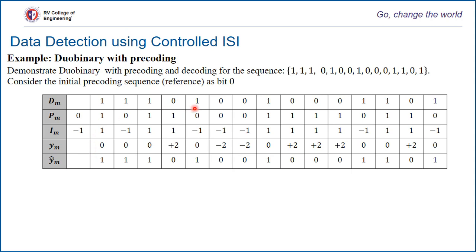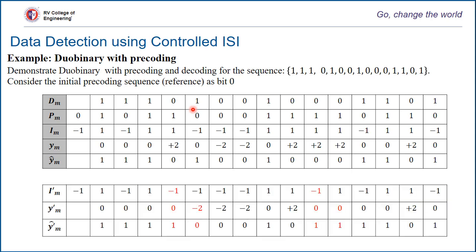Now let's introduce an error in this case. im, which is the transmitted and received sequence (since no white Gaussian noise is considered), has values: minus 1, plus 1, minus 1. I have introduced an error in the 4th bit as well as the 10th bit. ym-dash, the output of the receiver, is again the combination of two symbols: plus 1 + (minus 1) = 0, plus 1 + (minus 1) = 0, plus 1 + (minus 1) = 0, and so on for the complete sequence.